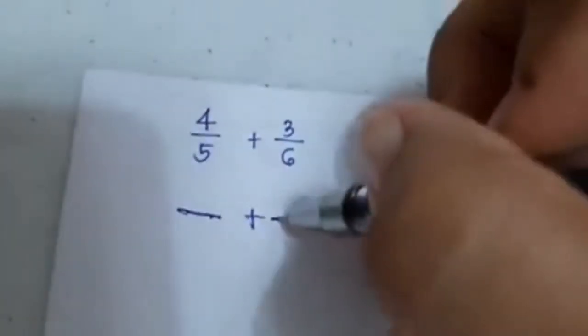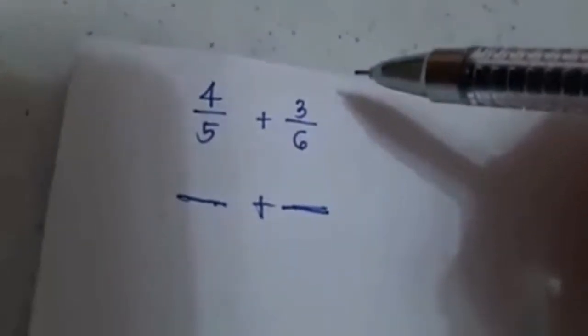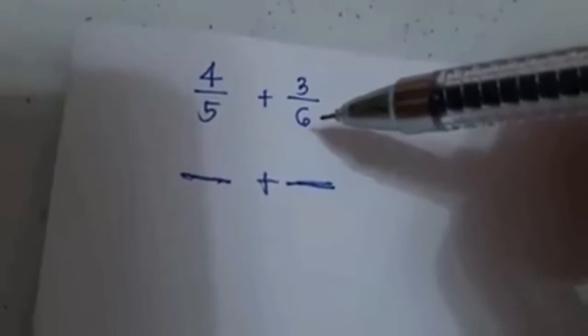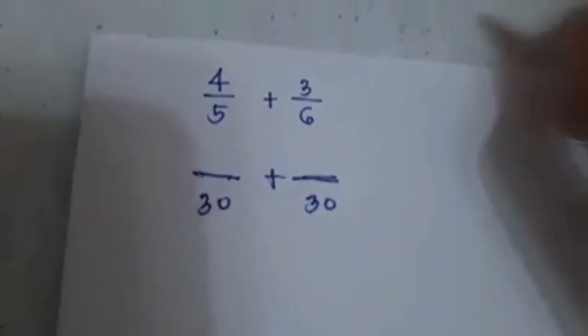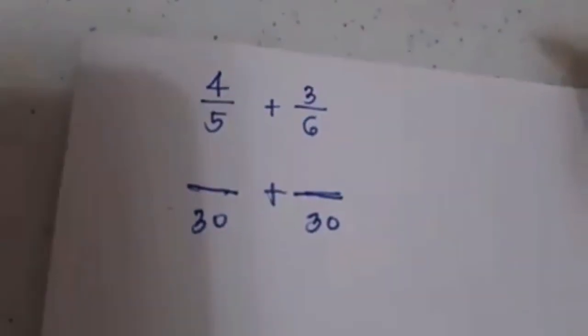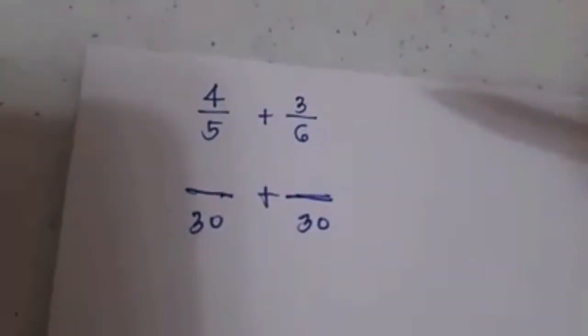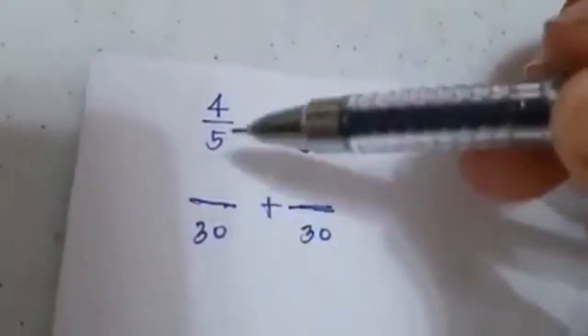To find the LCD, think of a product of five which is also a product of six. We are looking for the least such product, and that is 30. If you cannot do the mental math, skip count by five: 5, 10, 15, 20, 25, 30. Then skip count by six: 6, 12, 18, 24, 30. So 30 is a product of five and at the same time a product of six.